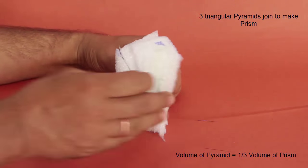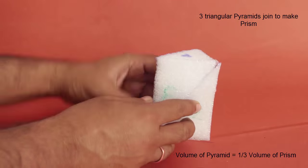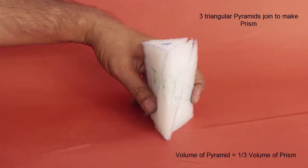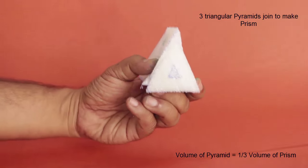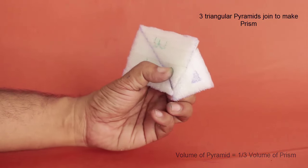So we can see that the volume of a prism is base times height and volume of a pyramid must be 1/3 base times height, since three equal pyramids make a prism.